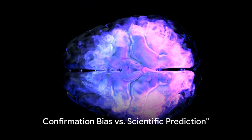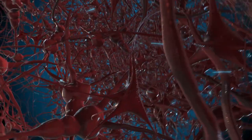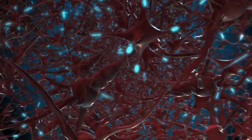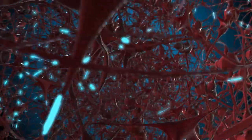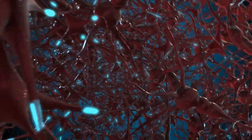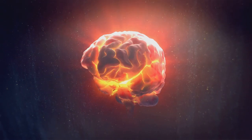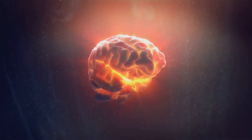So we have two powerful forces at play, confirmation bias and scientific prediction. But how do they stack up against each other? Let's imagine them as two fighters in the ring. In one corner, we have confirmation bias, the heavyweight champion of subjectivity. This fighter is known for its prowess in reinforcing beliefs and preconceived notions, giving us a sense of comfort and certainty.